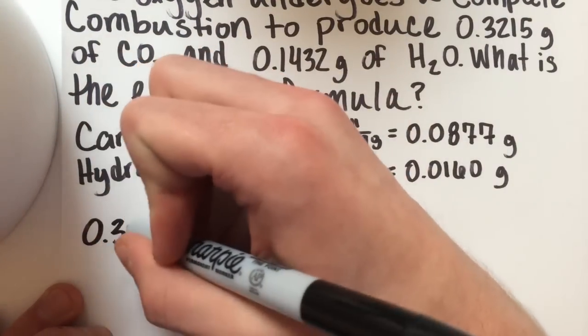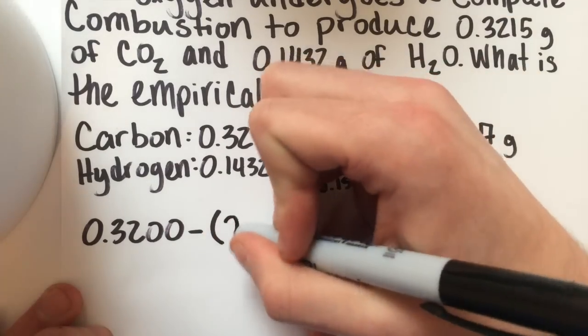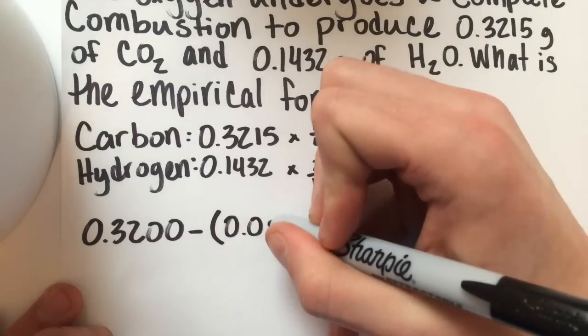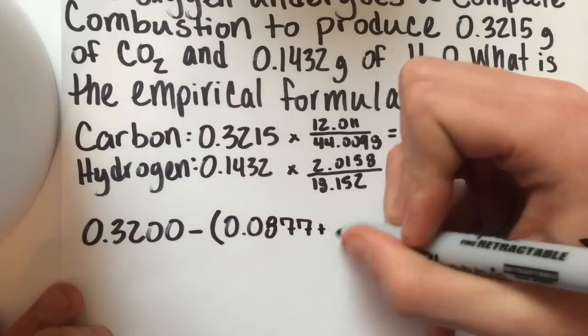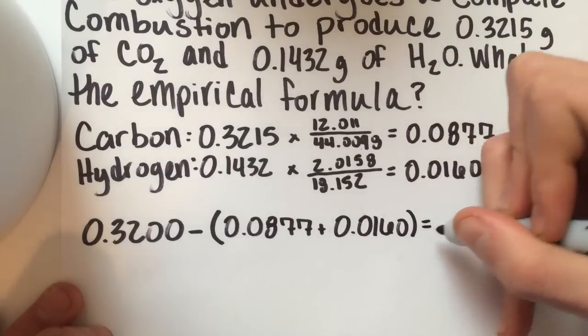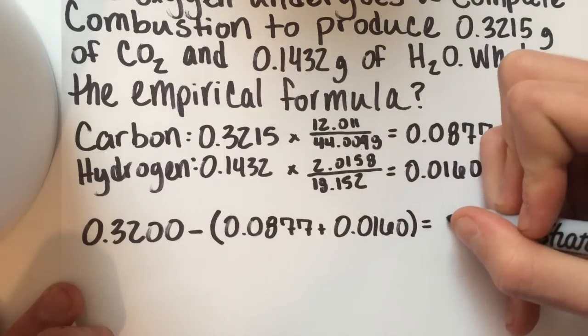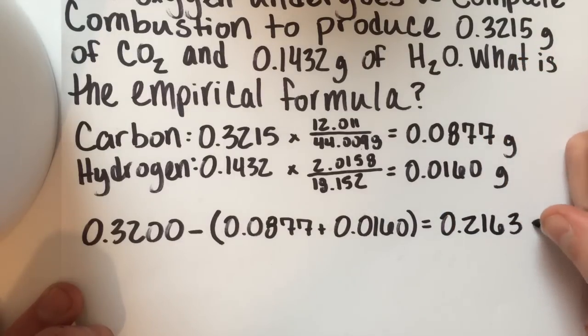0.3200 minus the sum of 0.0877 plus 0.0160 and that's going to leave you with a value of 0.2163 grams and that's your grams of oxygen.